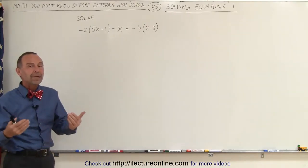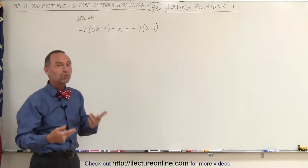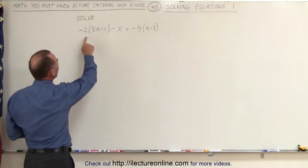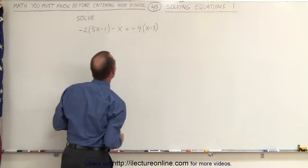There's a specific method that we follow. The first thing that we do, in case that we have parentheses, is we want to remove the parentheses, which means we're going to multiply the minus 2 times what's inside the parentheses, and the minus 4 times what's inside the parentheses.